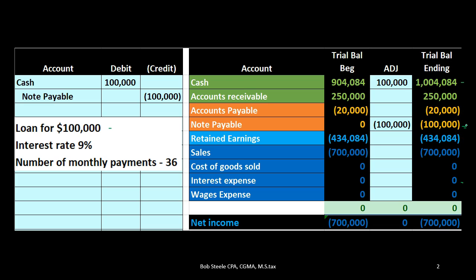The tricky part is when we make the payments, because we're going to make 36 even payments. Some of that will be decreasing the note payable, and some of those payments will be recorded as interest expense. It'll differ as time passes, so we're going to have to break those two out.